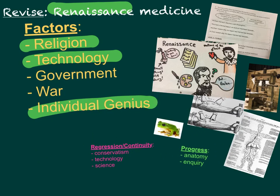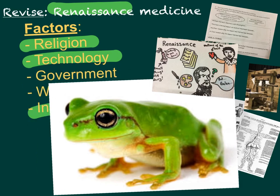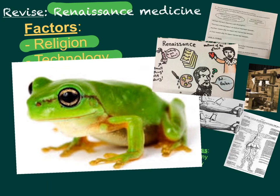Harvey's discovery about the motions of the heart was partly possible because of individual genius — he used to dissect frogs. He dissected frogs because they're cold-blooded, and he dissected them whilst they were still alive. Because they were cold-blooded, their hearts pumped more slowly and therefore it would take longer for them to die. So he could actually dissect a live frog and watch its heart pumping, learning a great deal from that.